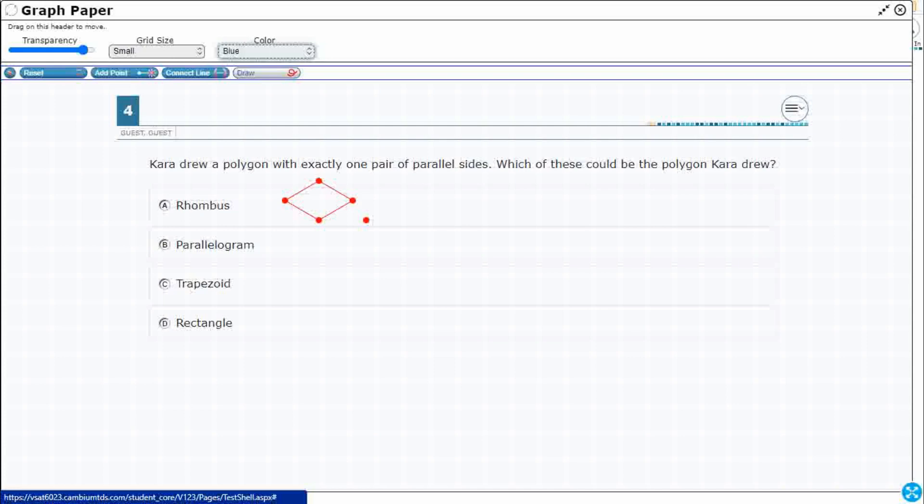So a rhombus is a quadrilateral, that means a four-sided polygon. It is a parallelogram, which means it's got two sets of parallel sides. And the special thing about a rhombus is it's got four equal sides.